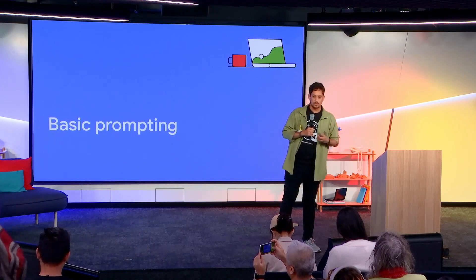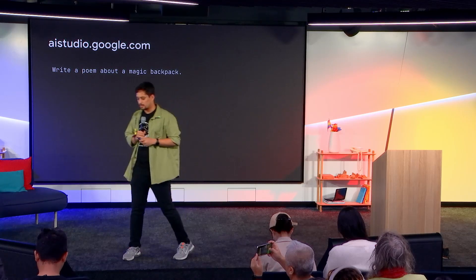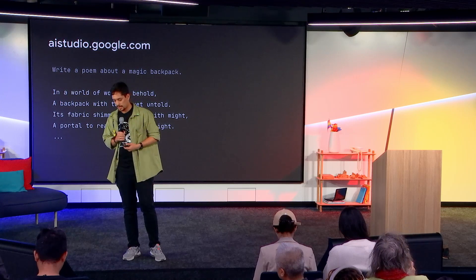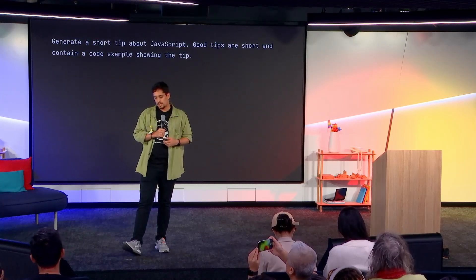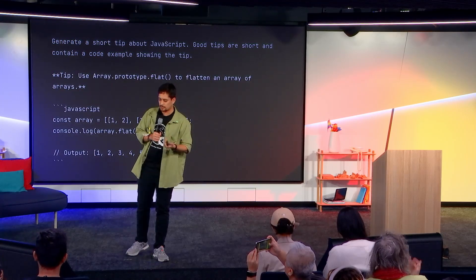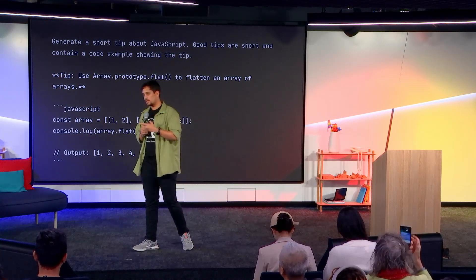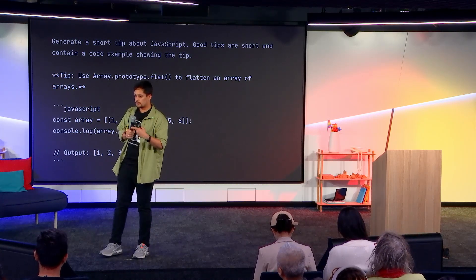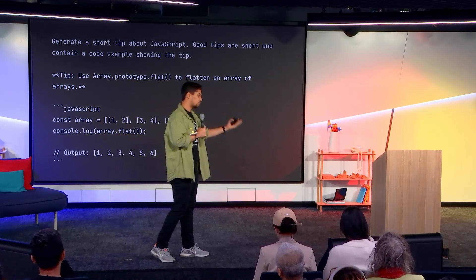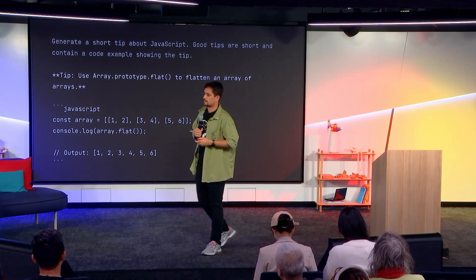Basic prompting is very much to do with prompt engineering. If you give a poem prompt to AI Studio, you will get a poem in response. You can also ask for a tip about JavaScript and get a relevant response. However, if you keep giving the same prompt again and again, you'll notice you're getting the same results — four or five attempts later, you'll get the same result and won't have a lot of creativity or varying information coming out.